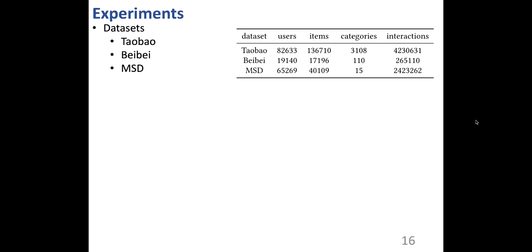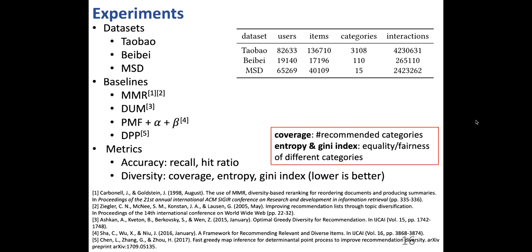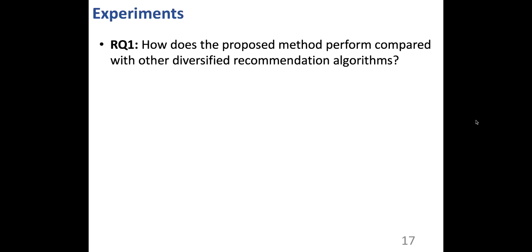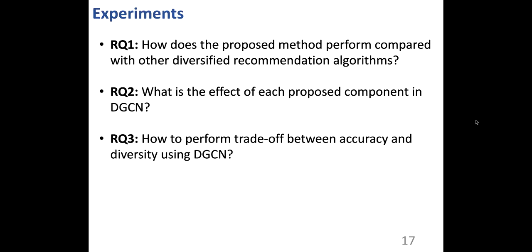We conduct experiments on three large-scale datasets, and here shows the basic statistics. We compare our proposed DGCN with four competitive diversification baselines. We evaluate both accuracy and diversity of all methods. For diversity, we adopt three widely used metrics: coverage, entropy, and Gini index. We aim to answer three research questions: how does the proposed method perform compared with other diversified recommendation algorithms; what is the effect of each proposed component in DGCN; and how to perform trade-off between accuracy and diversity using DGCN.